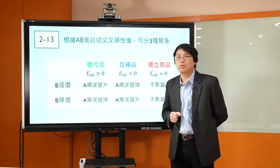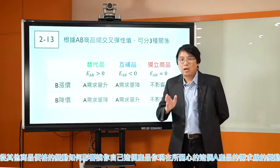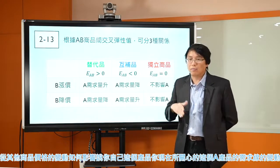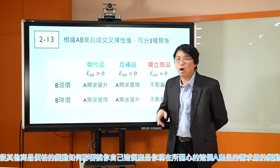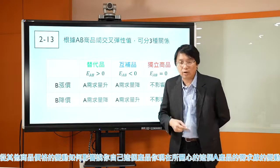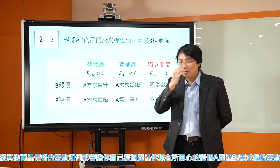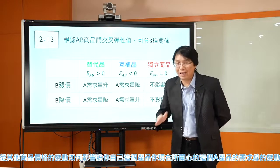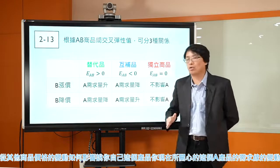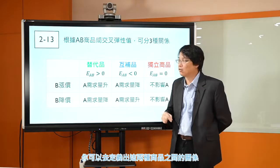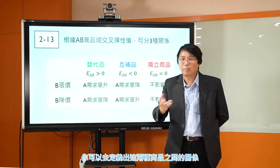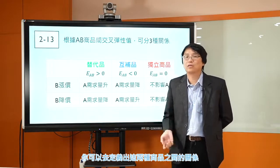我们之前谈到其他因素对需求线的影响时，其他因素里面有一个很重要的就是其他商品的价格。我们说其他商品价格变动的时候，显然会对你关心的这个产品的需求线造成影响。从其他商品价格变动如何影响A产品需求线的变动方向，你可以定义出这两种商品之间的关系。